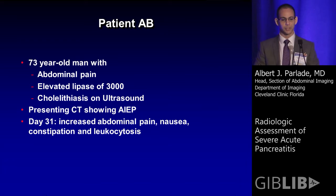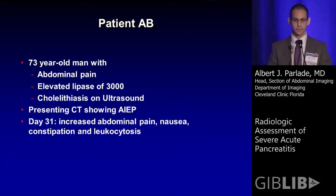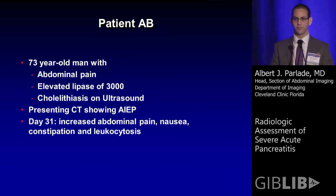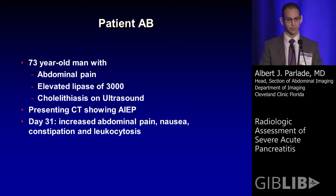We'll start with a patient — a 73-year-old man who came into the emergency room with abdominal pain, an elevated lipase of 3,000, and an ultrasound showing cholelithiasis. In the emergency room, he had a CT scan for his abdominal pain, which showed CT findings of interstitial edematous pancreatitis. This patient was hospitalized, discharged, and then returned on day 31 with increased abdominal pain, nausea, constipation, and leukocytosis.